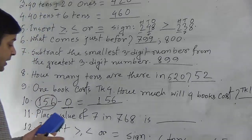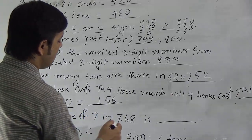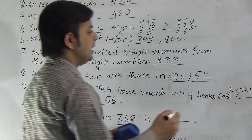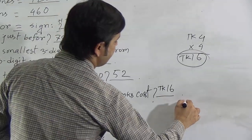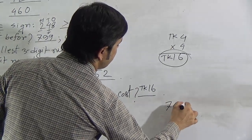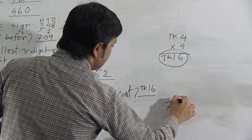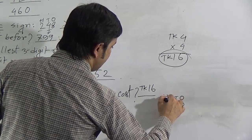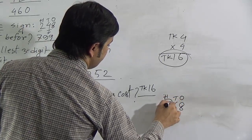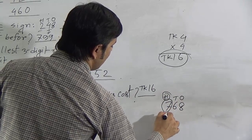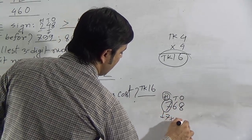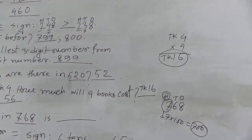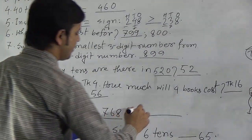Question 11: Place value of 7 in 768. Writing 768: 8 is in the ones place, 6 is in the tens place, and 7 is in the hundreds place. Since 7 is in the hundreds place, we multiply 7 by 100 to get the place value. The place value of 7 in 768 is 700.